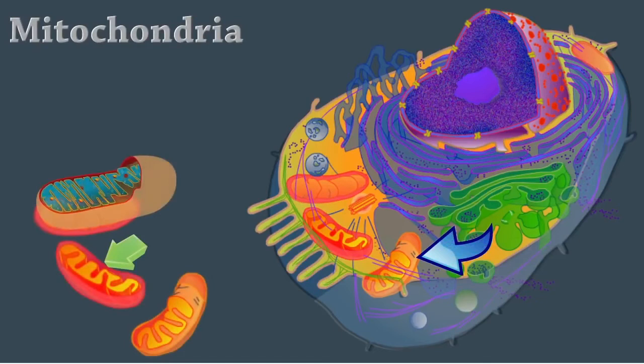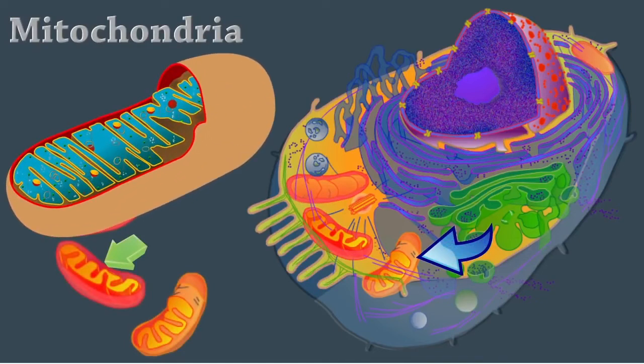Mitochondria are rod-like, double membrane structures. This inner membrane is folded into projections called cristae. This is the site of ATP synthesis and is the powerhouse of the cell. They help with other tasks like signaling, differentiation, and cell death. The number of mitochondria in a cell varies depending on the cell type. Red blood cells have no mitochondria, and liver cells can have more than 2,000.